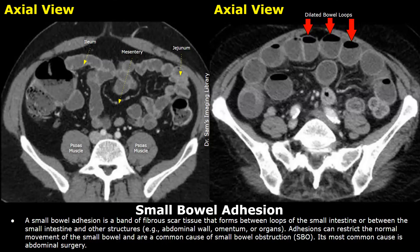The most common cause of an adhesion is abdominal surgery. So if a patient arrives with small bowel obstruction and they have a history of abdominal surgery, then the most common cause of small bowel obstruction is adhesion.